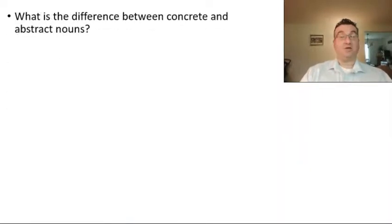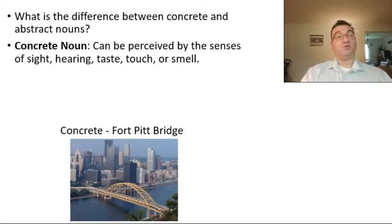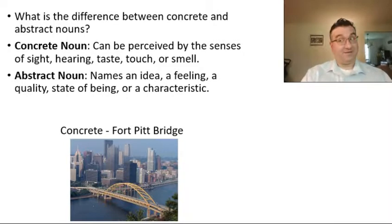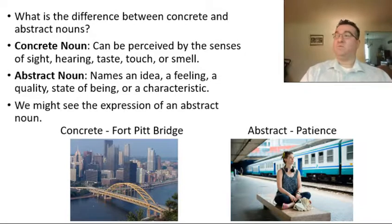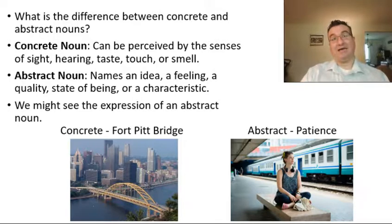What's the difference between concrete and abstract nouns? A concrete noun can be perceived by the senses of sight, hearing, taste, touch, and smell. So a concrete noun could be the Fort Pitt Bridge of Pittsburgh — you can see it, you can feel it. On the other hand, an abstract noun names an idea, a feeling, a quality, a state of being, or a characteristic. For example, patience is an abstract noun. We can see the expression of patience — that lady is being patient while she waits for a train — but that's not the patience itself. Sometimes we see outer expressions of an abstract noun, but that's not the noun itself; it's just how the noun manifests.